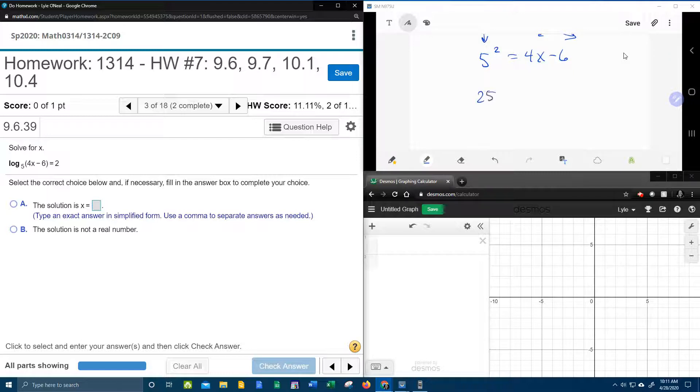5 squared is 25. The minus 6 needs to come over, so that will make that a plus 6. 25 and 6 is 31, and then we're going to divide both sides by 4, and we're done. x equals 31 fourths.